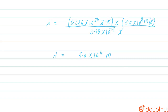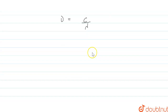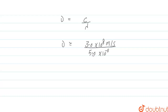Now we calculate the frequency. The relation between frequency and wavelength is μ = c/λ, where c is the velocity of light = 3.0 × 10⁸ m/s, divided by λ = 5.0 × 10⁻¹¹ meters. Meters cancel, and we get frequency μ = 6.0 × 10¹⁸ s⁻¹. This is our frequency.